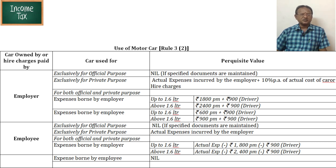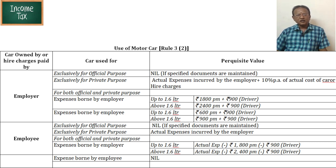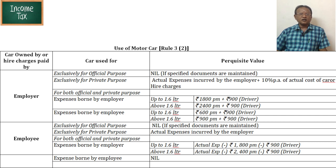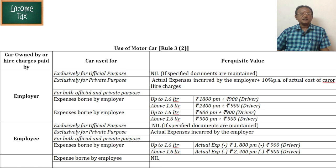The car cost is taken into account. Suppose the employer provides a car and the car has a cost. The third category is where the car is used partly for official purpose and partly for personal purpose.